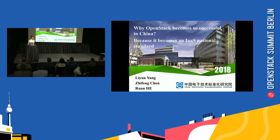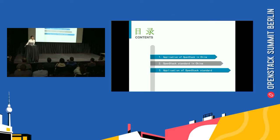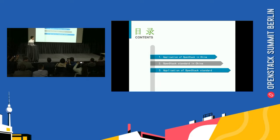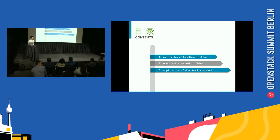There are three parts. The first part is what's the implication of OpenStack in China. The next part is how we work on the OpenStack standards. The third part is the application of OpenStack standards.